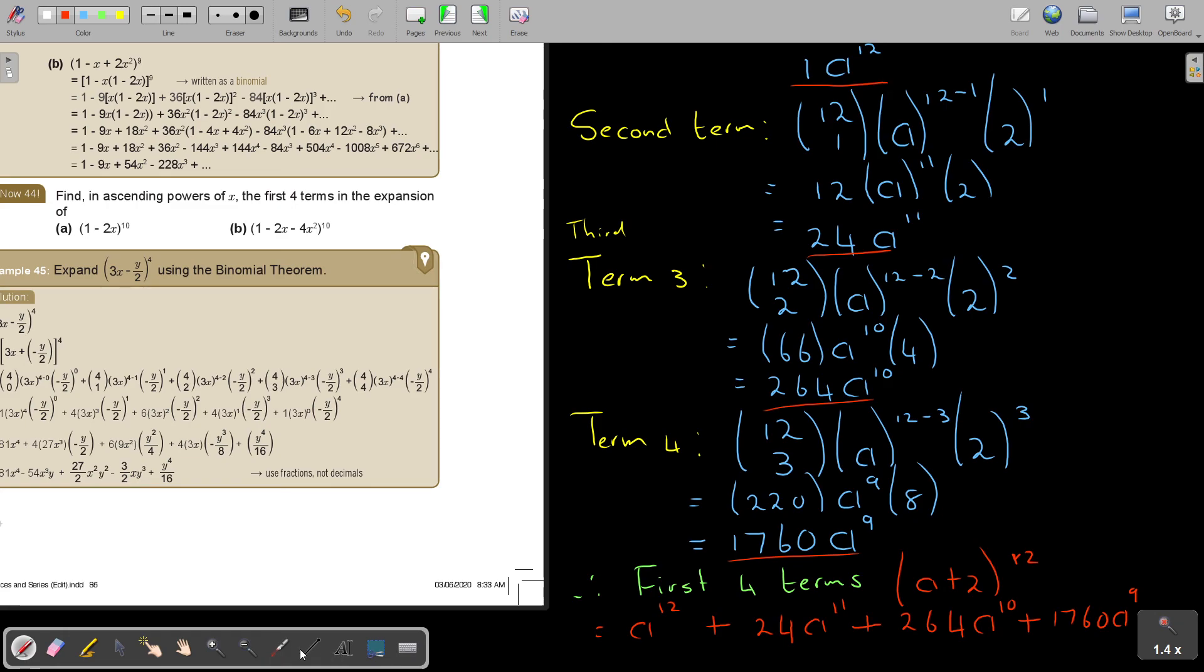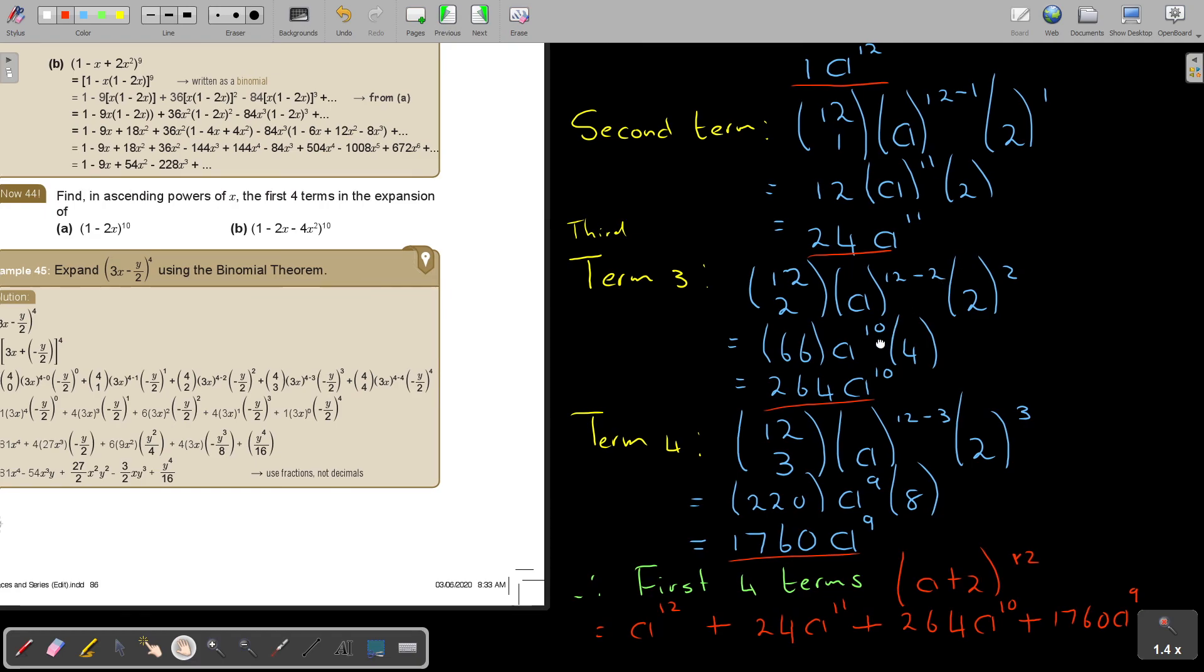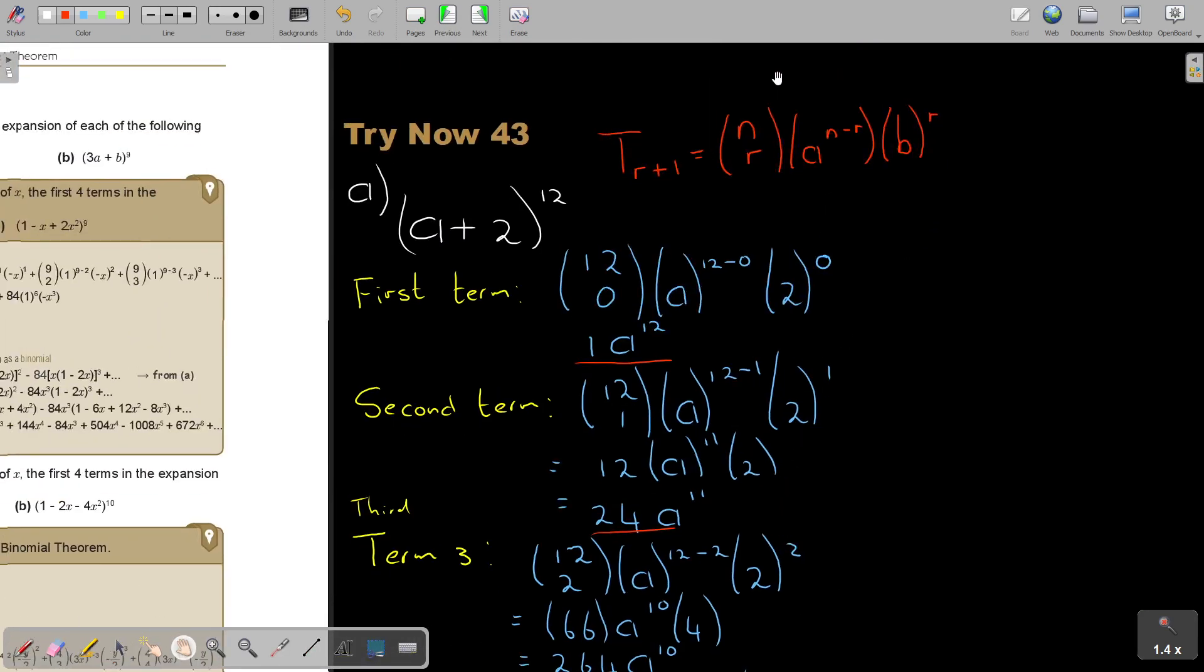So just make use of this formula when you work out the terms. Where this indicates the first term in the bracket, this is the second term. And R plus 1, so that will be the position of the terms. Because you start with 0, so 0 plus 1, that will indicate the first term.